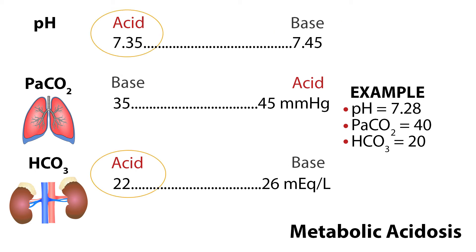Now we will look at metabolic situations. Metabolic acidosis and metabolic alkalosis are caused by the levels of bicarbonate ion in the blood. The kidneys excrete these ions into the urine so they can be eliminated when not needed. If the pH is low — in this example 7.28 — circle acid. The PaCO2 is within normal range at 40, and the HCO3 is acidic at 20. With low bicarb levels and a low pH, you have metabolic acidosis.